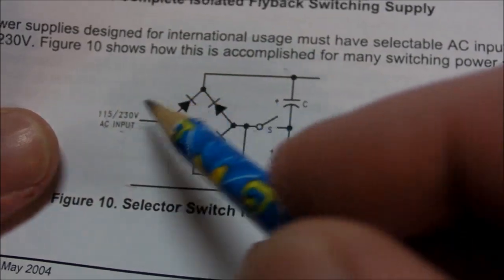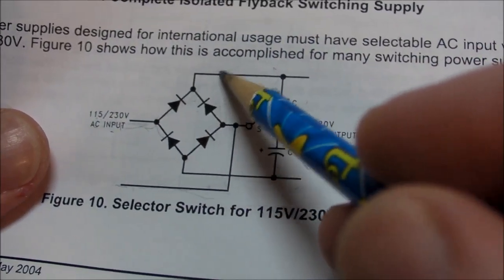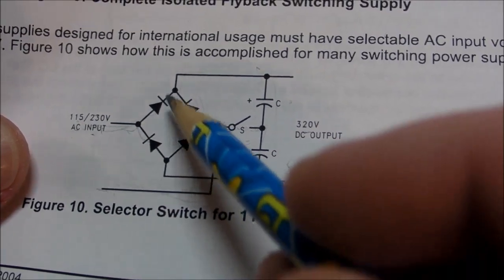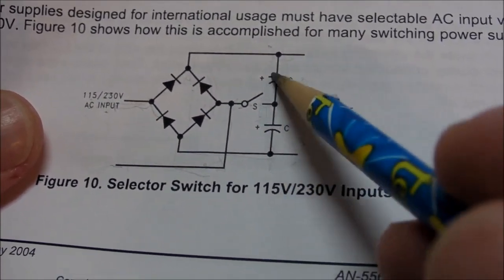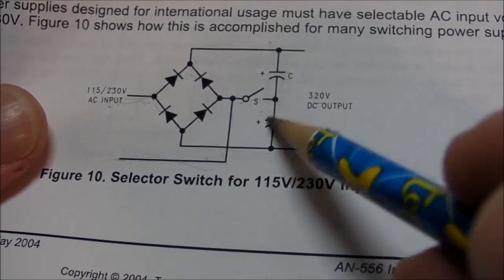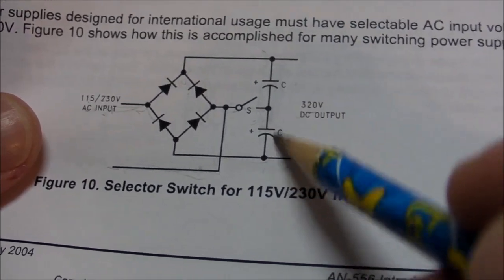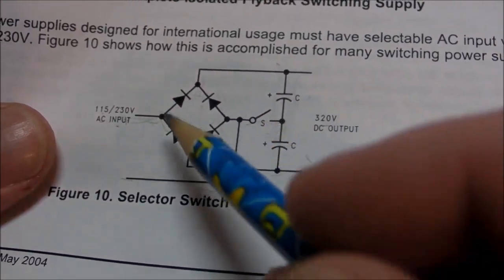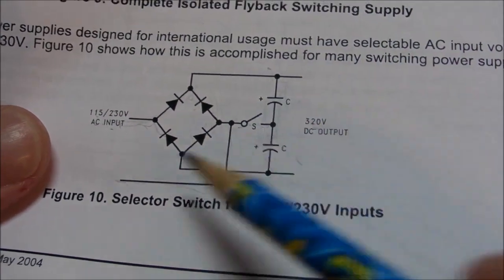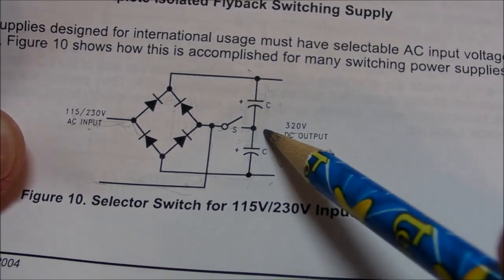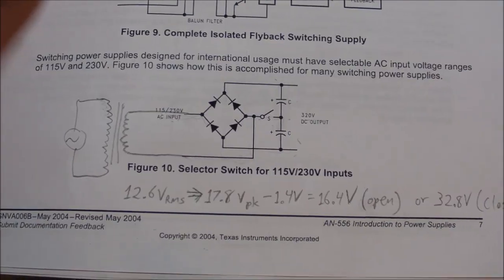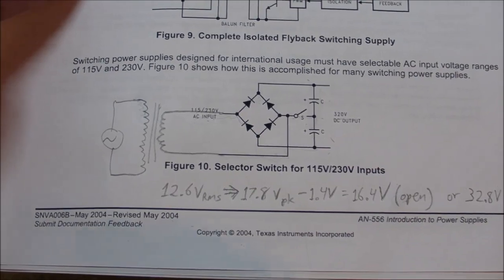With 230 volt input, then what you want to do is open that switch, so then it acts like a normal full wave bridge rectifier and a single capacitor filter with these two caps basically equivalent to a single capacitor. And that's it, you got 230 volt AC RMS in and 320 volt DC coming out.